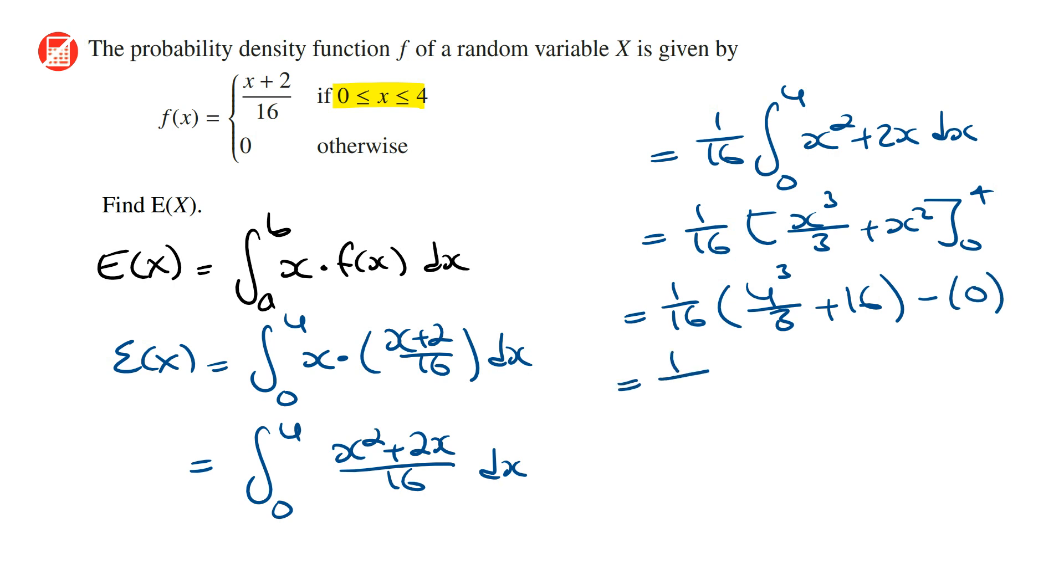Simplifying this, this is going to be 1 on 16, and 4 cubed we can write as 16 times 4 over 3, and then plus 16. Expanding this, the 16s will cancel out, and so we're going to get 4 on 3, and then 1 on 16 times 16 is going to be 1.